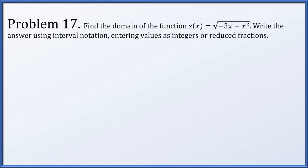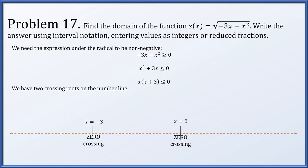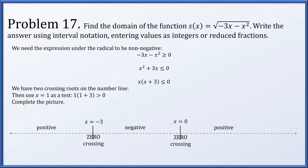In problem 17, find the domain of s(x) = square root of (negative 3x minus x squared), written in interval notation. The restriction is that the expression under the radical must be non-negative: negative 3x minus x squared ≥ 0. Multiplying by negative 1 and reordering: x squared plus 3x ≤ 0, which factors as x(x plus 3) ≤ 0. We have crossing roots at negative 3 and 0. Testing x = 1 gives positive, so working leftward: positive, negative, positive. We need ≤ 0, which happens between negative 3 and 0, including both endpoints. The domain is [negative 3, 0].